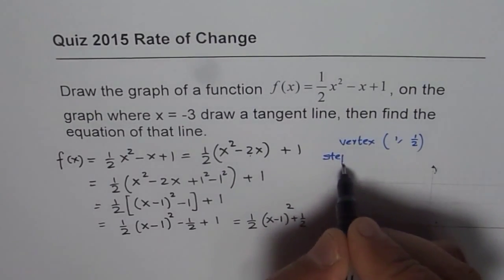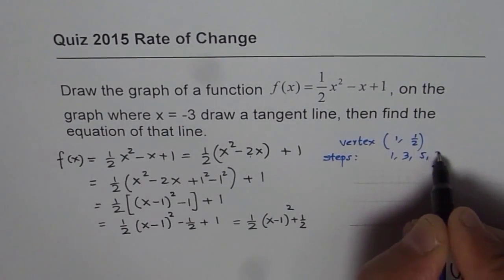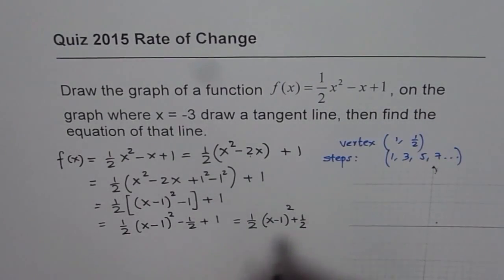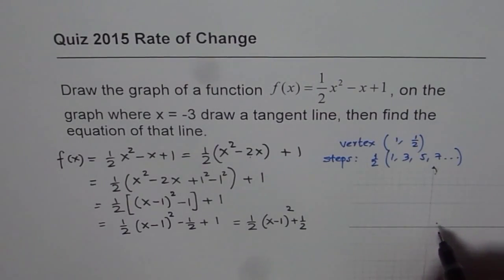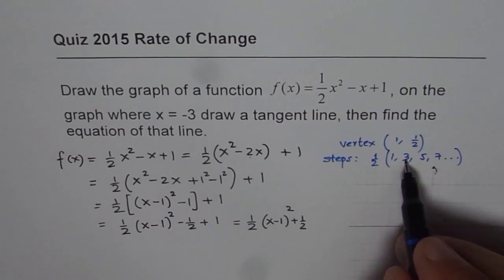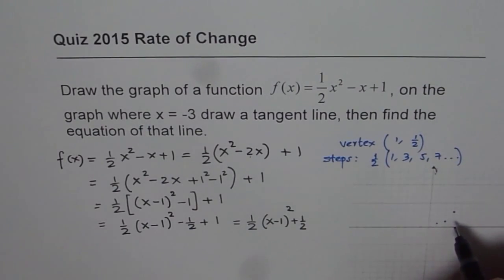And the steps are, so normally the steps are 1, 3, 5, 7, so on. In this case, since the value of a is 1/2, we will multiply this by 1/2, right? You can always make table of values and sketch it. That is clear. So we will do 1/2 is the first step, correct? And the second step is 1 and a half. So second step is 1 and a half. Third will be 2 and a half from here. That means 1/2 and 1, 2, kind of like this.